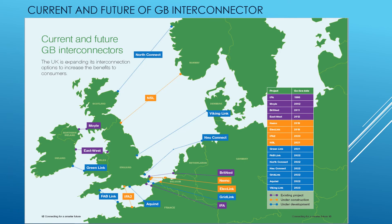This slide shows the current and future Great Britain interconnectors. The UK is expanding its interconnection options to increase the benefit to consumers. The purple color shows the existing interconnectors between UK and Northern Ireland, UK and Ireland, UK and Netherlands, and UK and France. There are four interconnectors planned in the next five years: NEMO, Electlink, IFA II, and NSL, with a few more planned in the coming years. These interconnectors connect different countries with the UK, allowing us to transfer electricity when needed — and this is the future of energy. Thank you.